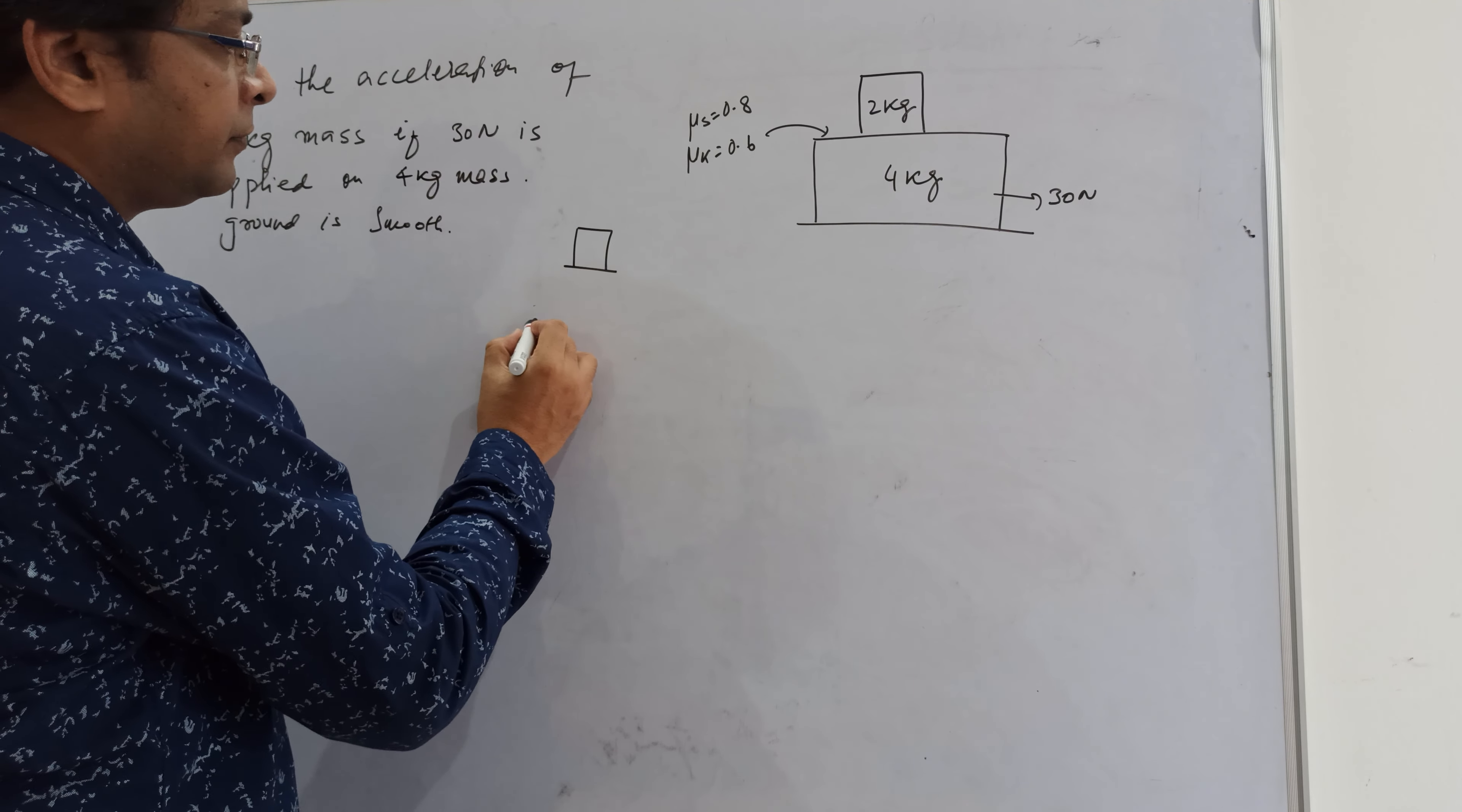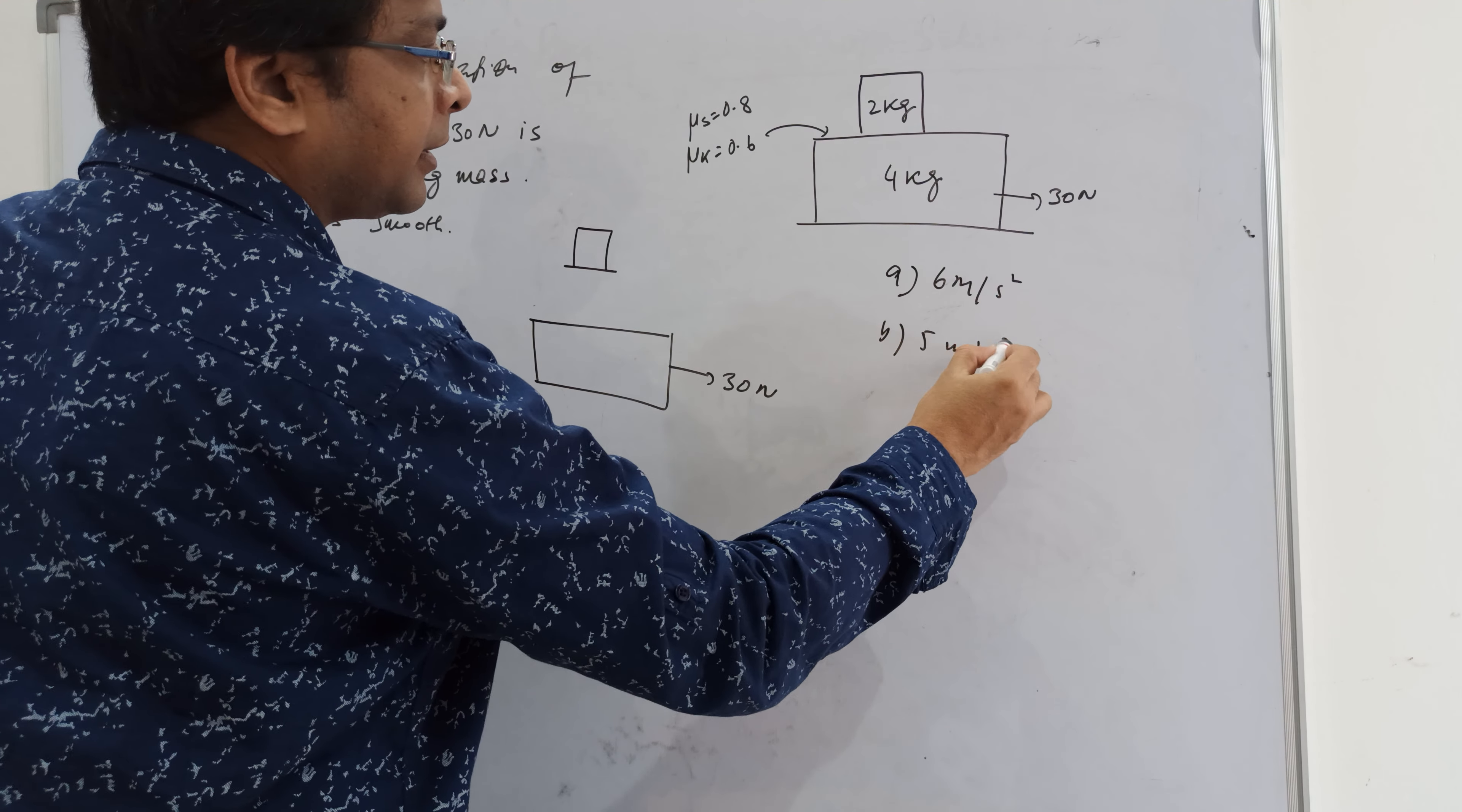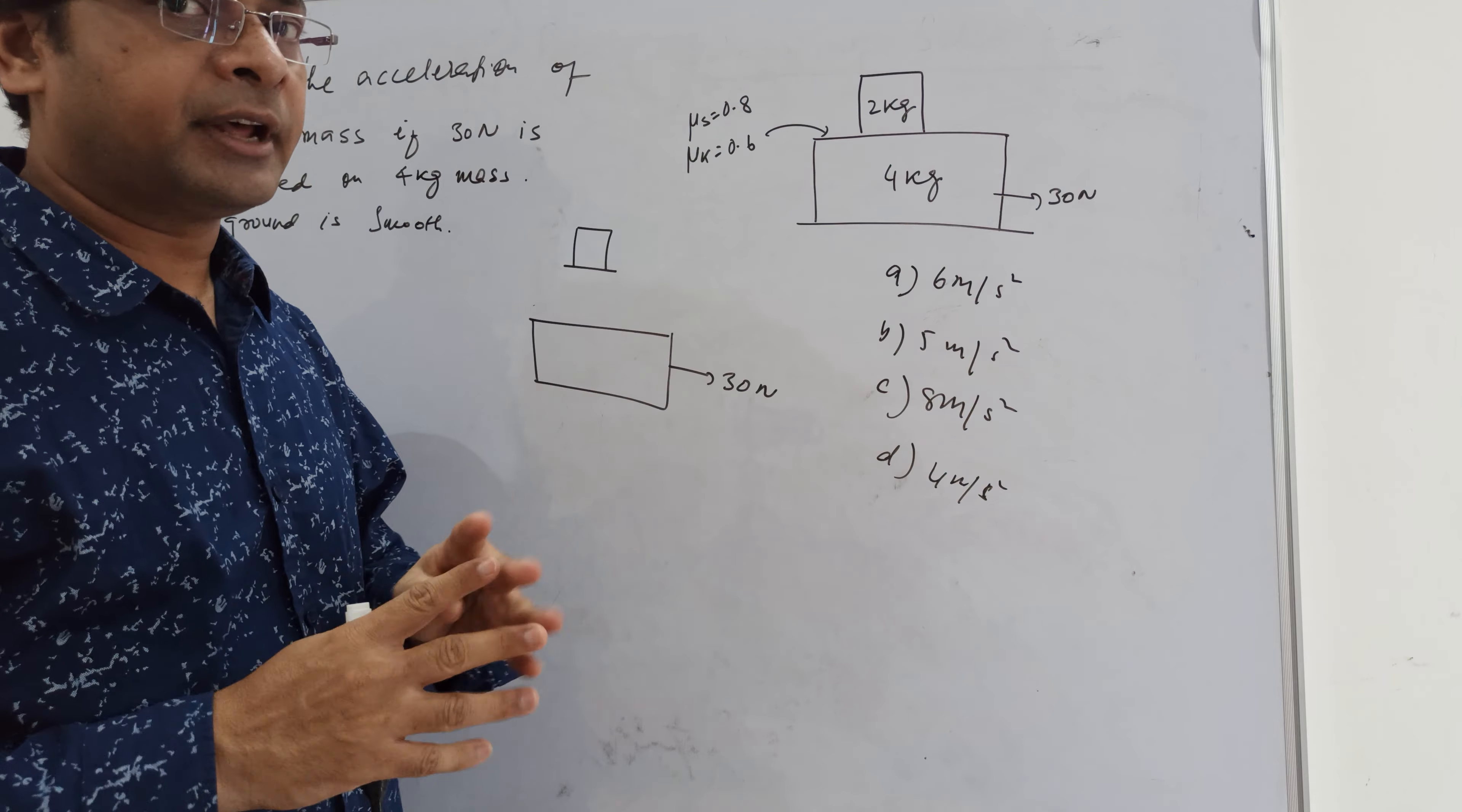If we draw the free body diagram, we can see here 30 newton. We have to find the acceleration of 2 kg block and we have been given 4 options: 6 meter per second square, 5 meter per second square, 8 meter per second square, and 4 meter per second square. According to the given situation, the body is moving, it's not at rest.